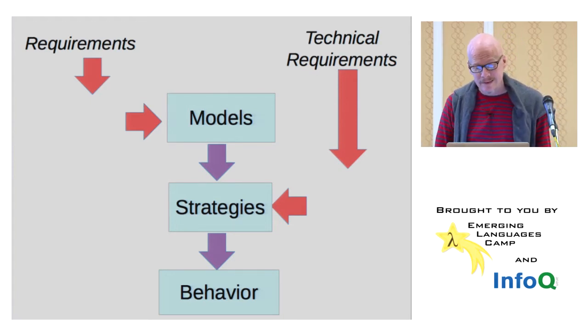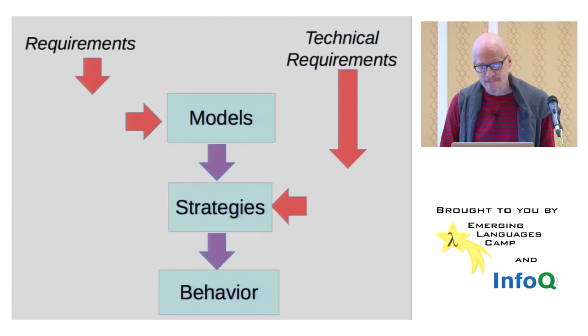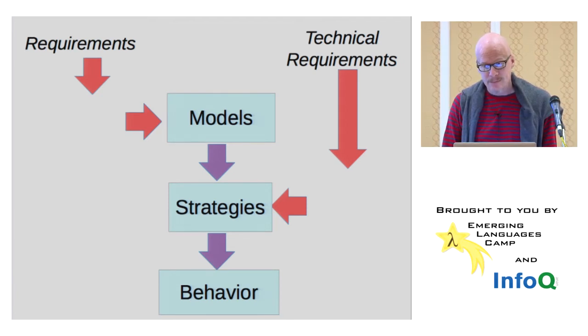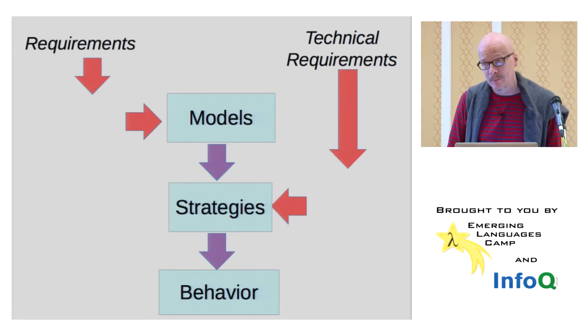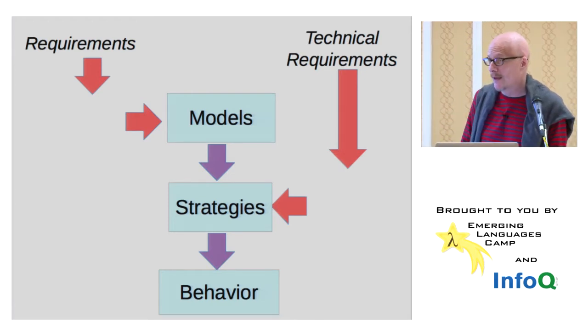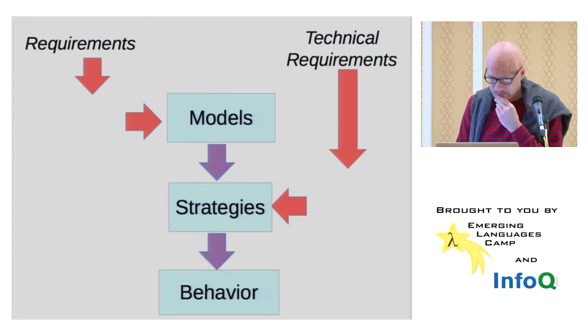And the idea being that the model represents sort of the specifics of the application. The strategy is the specifics of how to make that application work. And then the strategy implementing the model, the model is given as an input to the strategy actually. And then that will generate the behavior. And so this is a fairly radical way of looking at software. If you could do this, it would be interesting. At the same time, there are people who have been saying that we should do this for a while. So anyway, let me tell you about my experience trying to do this.